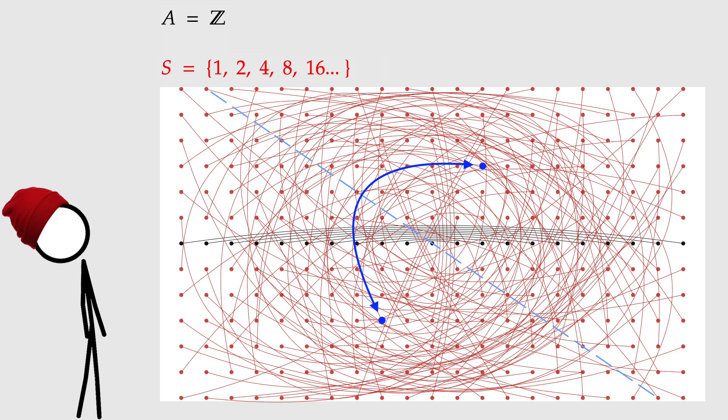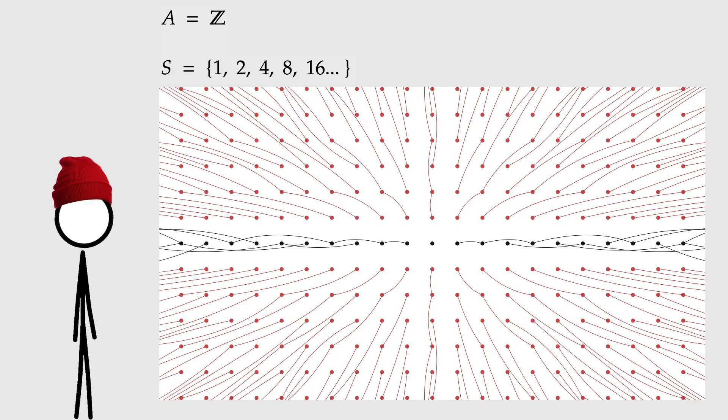What else? In this one, I've made S the powers of two. One, two, four, eight, sixteen, et cetera. And that causes each point to connect to the one twice as far away, and also the one four times as far away, and the one eight times as far away, and sixteen times as far, and so on.